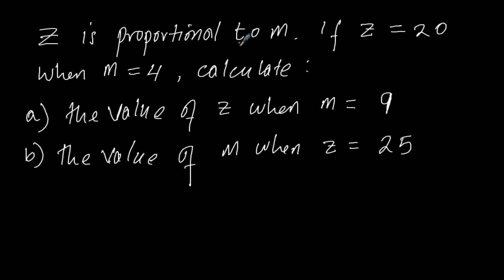So our question is: Z is proportional to M. If Z equals 20 when M equals 4, calculate: a) the value of Z when M equals 9, and b) the value of M when Z equals 25. Let's first start with this statement.